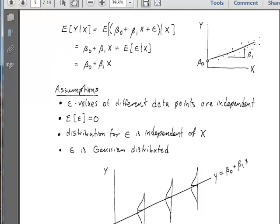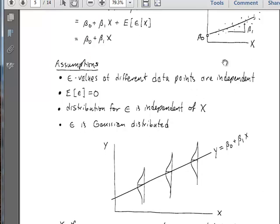In order to do this, we have to make a couple of assumptions. We're going to take these epsilon values and we're going to assume that at different data points, the epsilon values are independent of each other. We're also going to assume that the expected value of this epsilon averages to zero. That is, it's scattered uniformly, symmetrically above and below the line. And we're further going to assume that the distribution of epsilon as a function of x is independent of this x.